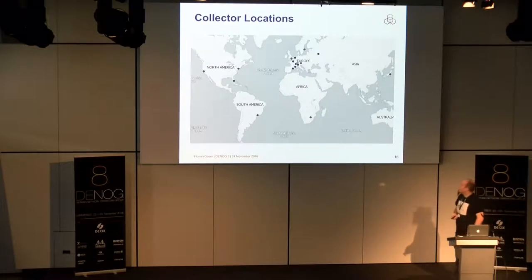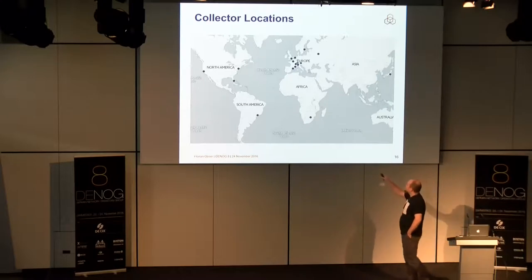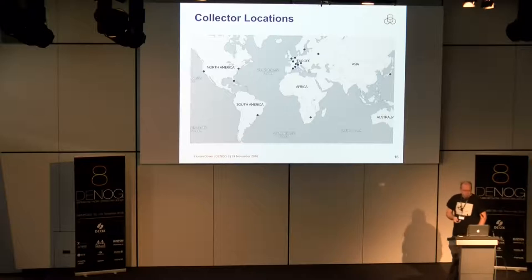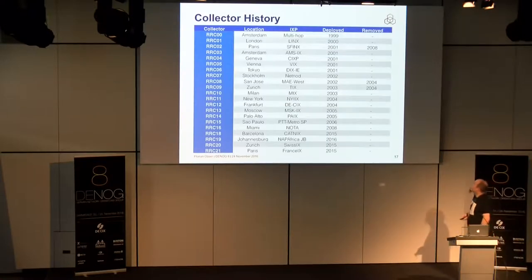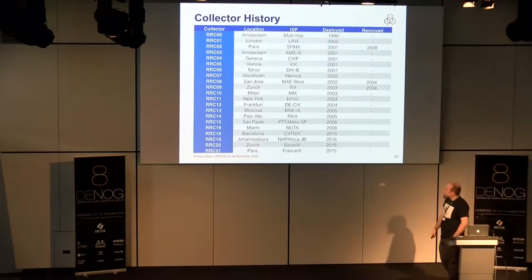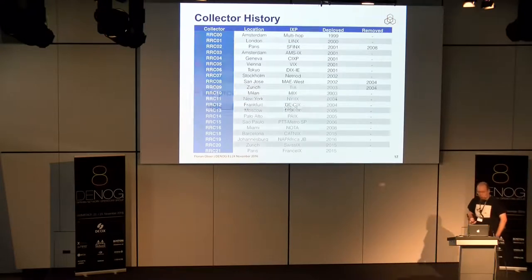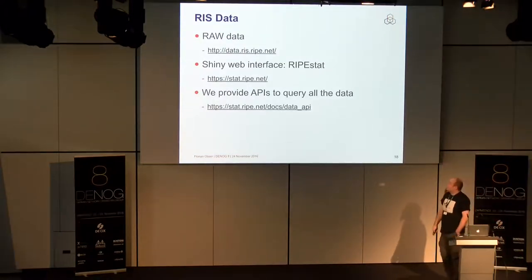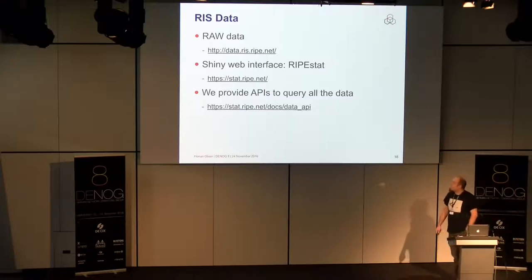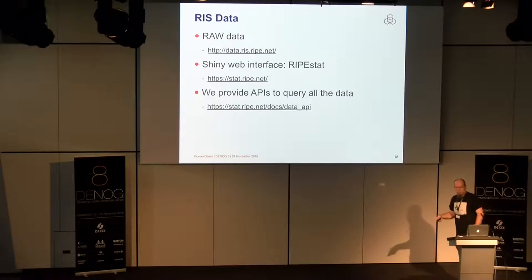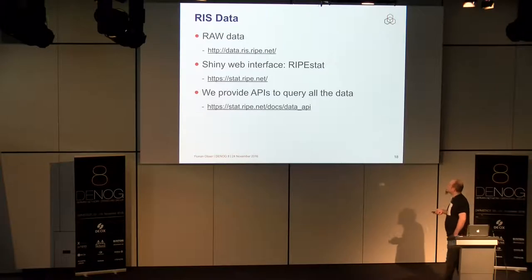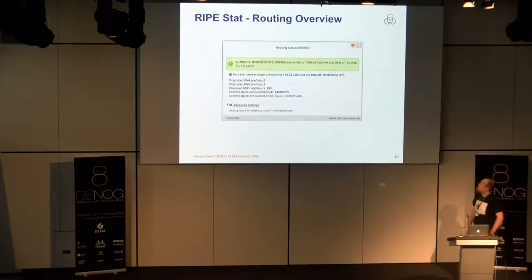We have collectors in these locations. It's a bit European-centric, but we are particularly proud of some new ones, for example in South Africa. We have history going back to the first one in 1999 in Amsterdam. Some got decommissioned. The interesting new ones start with RRC 18 to 21 — we're calling them the new style RRCs. We collect all the data, and you can get the raw data — more than 15 years' worth — at the URL shown. We also have a web interface and we provide an API, and the web interface actually uses that API.